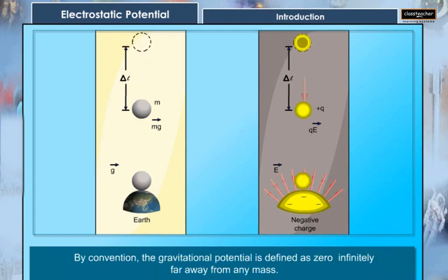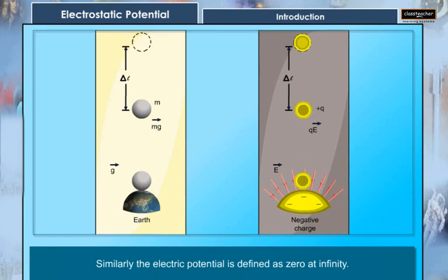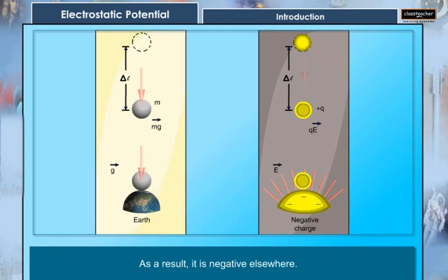In mechanics, the gravitational potential at a location is equal to the work energy transferred per unit mass that is done by the force of gravity as an object moves to that location from a reference location. It is analogous to the electric potential with mass playing the role of charge.